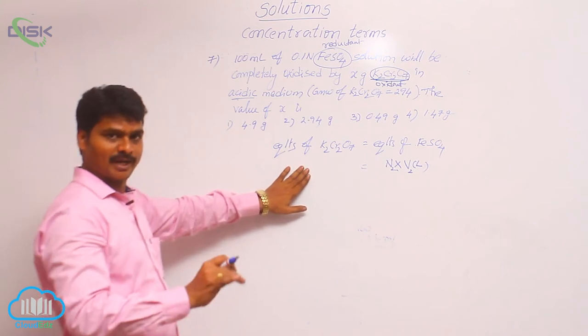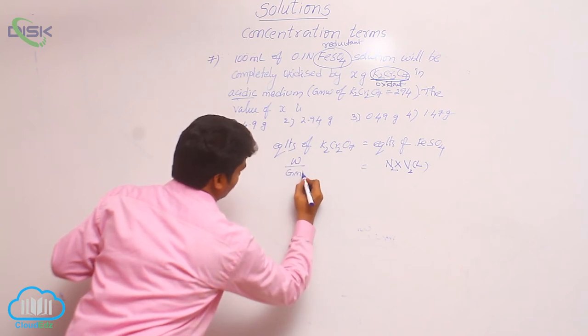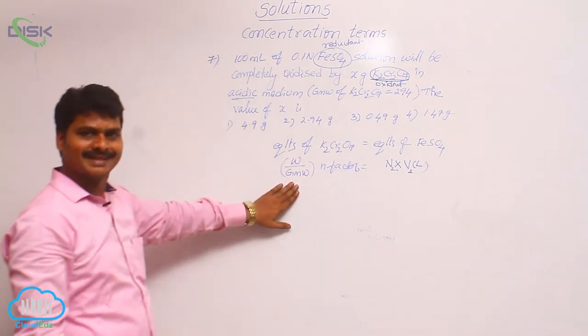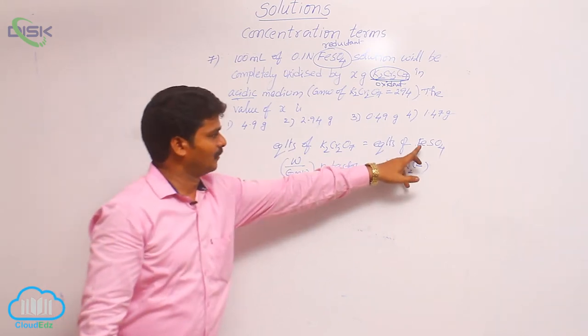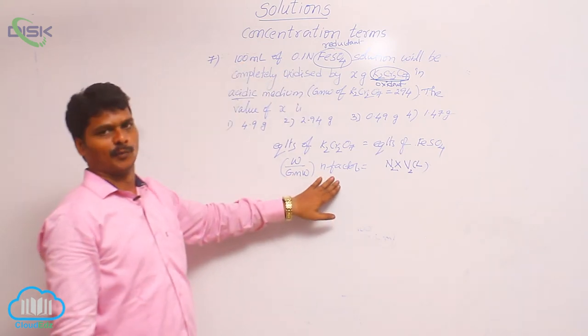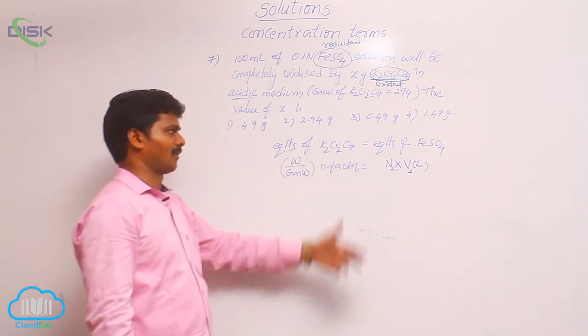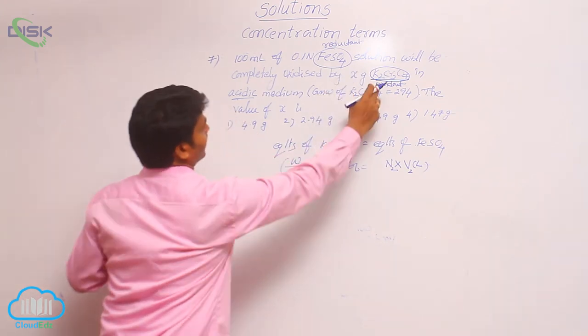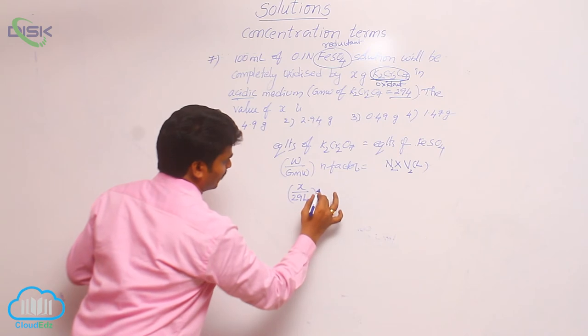Number of moles means weight by molecular weight times N factor. Why did I select this formula? About FeSO4, normality and volume are given. But about potassium dichromate, only weight is to be determined. That is why I took different formulas for equivalents. Here, weight is unknown x. Gram molecular weight is given in brackets as 294. What is the N factor?